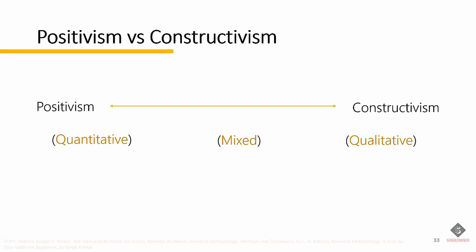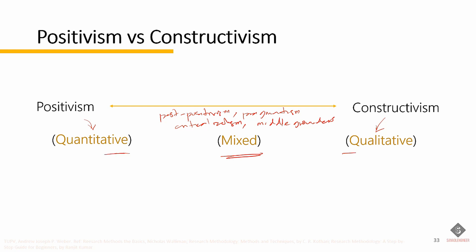There is also another way in which research paradigms can be categorized: quantitative, qualitative, and mixed paradigm. Positivism falls under the quantitative, constructivism under the qualitative, and intermediate paradigms like post-positivism, pragmatism, critical realism, and other middle grounders belong in the mixed — meaning these paradigms use both quantitative and qualitative methods.